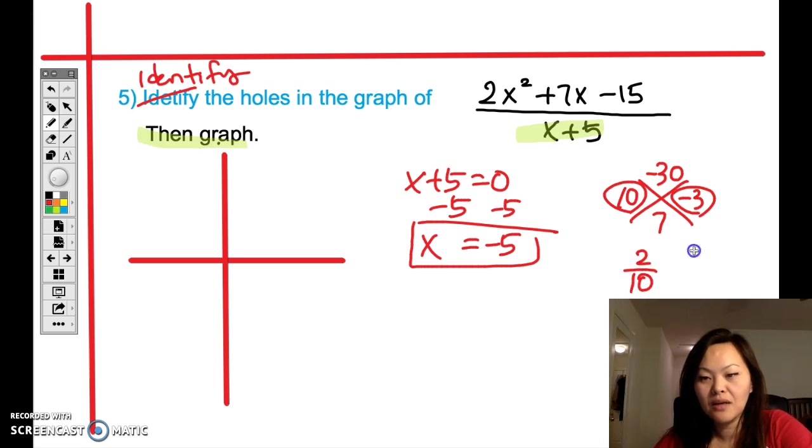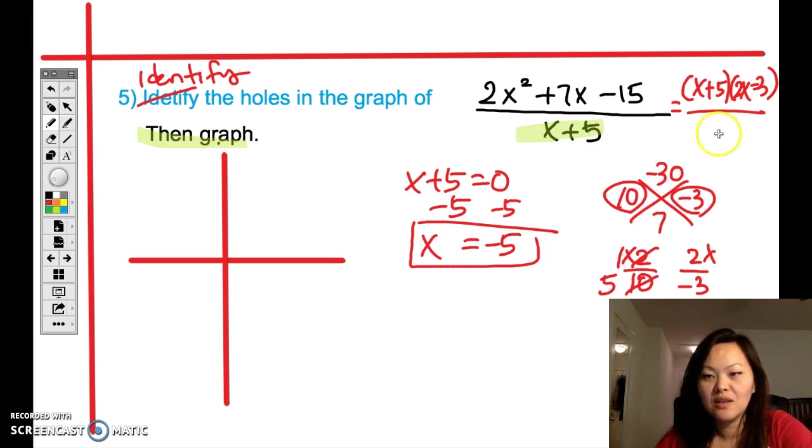And when you add them together you have 7. Our leading coefficient is 2, so you put 2 on top, 10 at the bottom, 2 on top, negative 3 at the bottom. We simplify and then we put the x next to each other, so we know that the top is going to be x plus 5 and 2x minus 3.